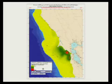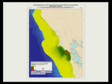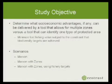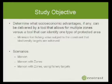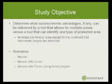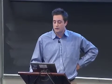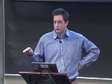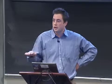Our study objective was to determine if any socioeconomic advantages can be delivered through a tool that allows for multiple zones versus one that just allows for one type of protected area. We ran three scenarios: a typical Marxan scenario, one with Marxan with zones, and one with Marxan with zones where we also included fisheries as targets in addition to conservation features. We wanted to see if there's a threshold at which you can minimize impact equitably across all fisheries while still achieving conservation objectives.